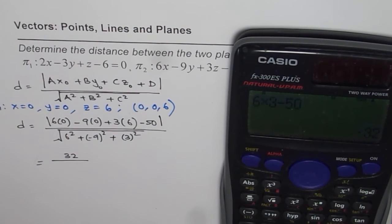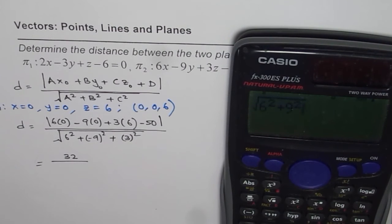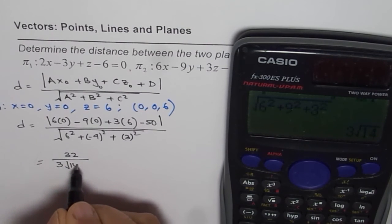So that is what we get. Now in the denominator it is square root of 6² + 9² + 3² = √(36 + 81 + 9) = √126 = 3√14.